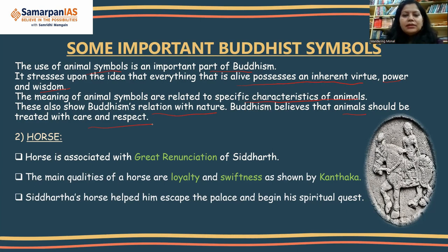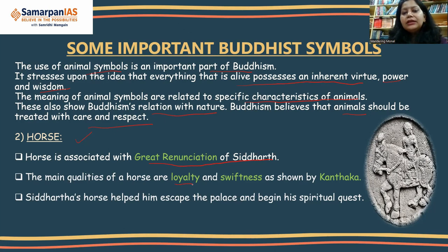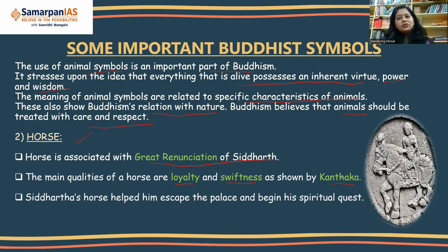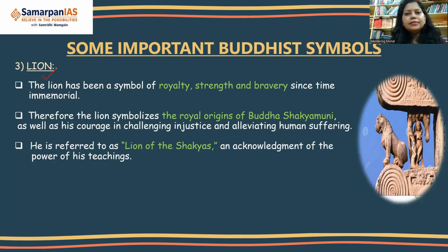The horse is associated with the Great Renunciation of Siddhartha — the important event when he left his palace, his wife, and his son. He moved out of the palace with his charioteer and his horse Kanthaka. The main qualities of the horse are loyalty and swiftness, as shown by Kanthaka, who was very loyal and swift. It is said that when Siddhartha left, Kanthaka died of grief. Siddhartha's horse helped him escape the palace and begin his spiritual quest.